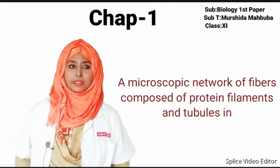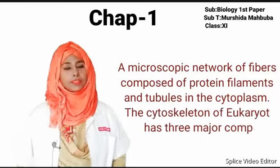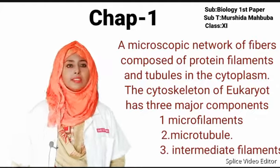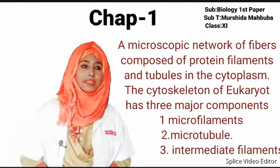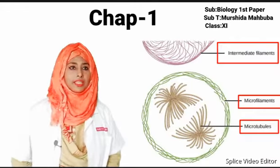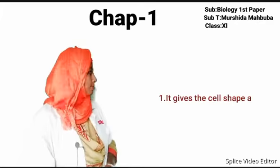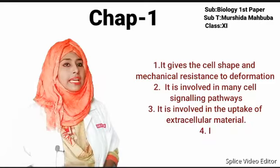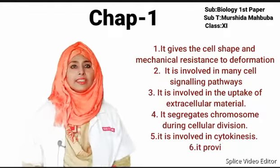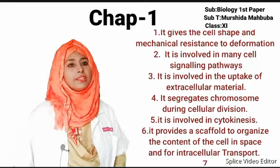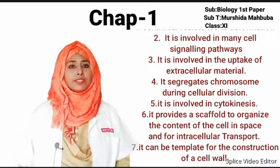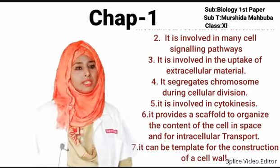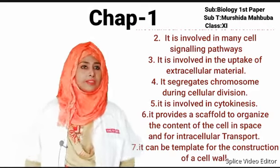Cytoskeleton: The cytoskeleton is a microscopic network of fibers composed of protein filaments and tubules in the cytoplasm. The cytoskeleton of eukaryotes has three major components. Functions of cytoskeleton: It gives the cell its shape and mechanical resistance to deformation. It is involved in many cell signaling pathways, in the uptake of extracellular material, and it segregates chromosomes during cellular division. It is involved in cytokinesis and can be templated for the construction of the cell wall.